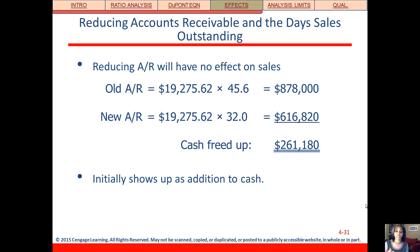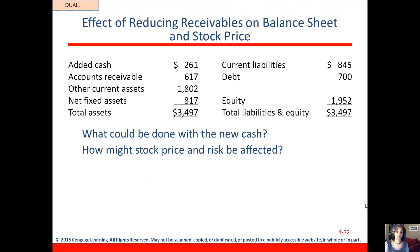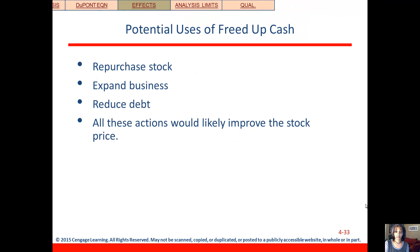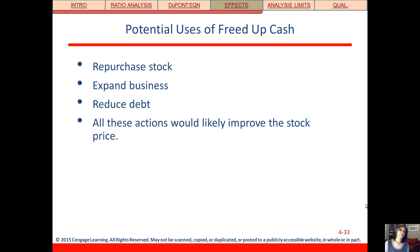This change is initially going to increase or improve their cash position. So if you get all that cash — $261,000 — what do you do with it? You could further reduce debt, you could buy back stock, you could do further expansions. All of these things would probably improve the stock price.